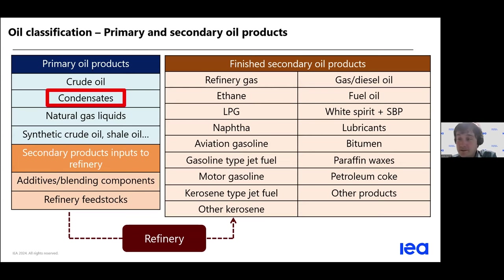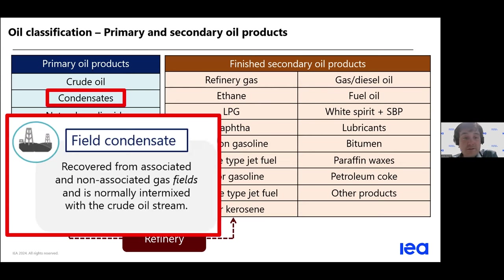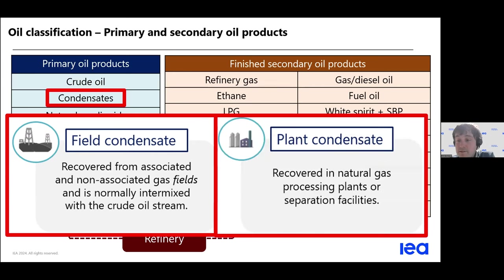In more detail about condensates: we distinguish two types — field condensates, which are recovered from gas fields, and plant condensates, which come, as the name indicates, from separation facilities.